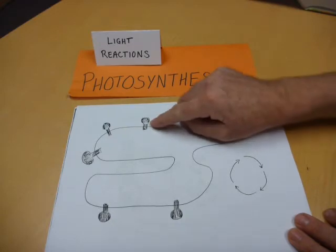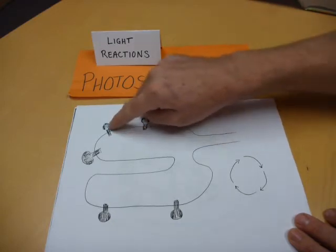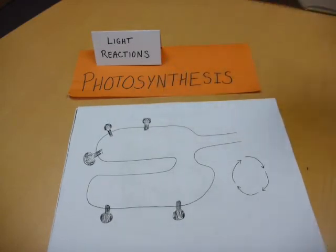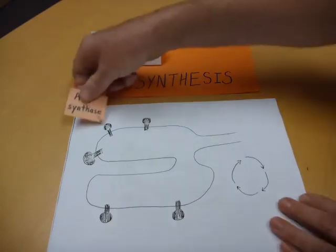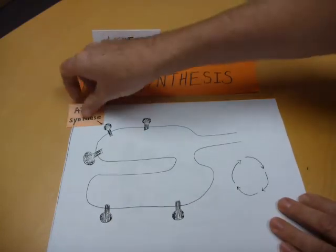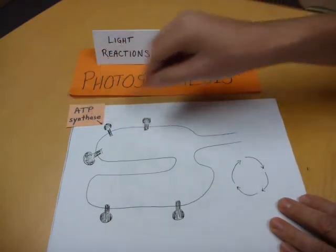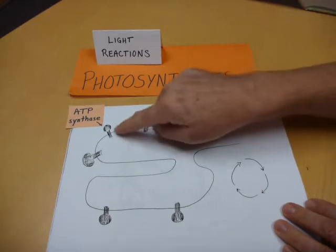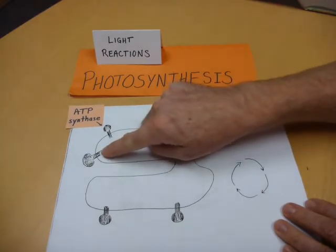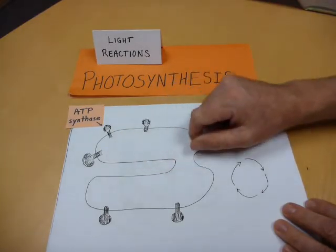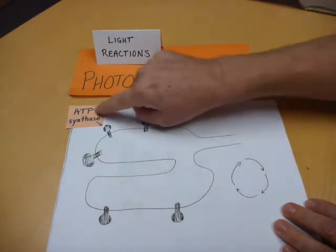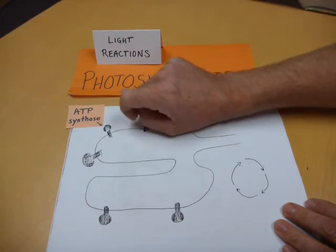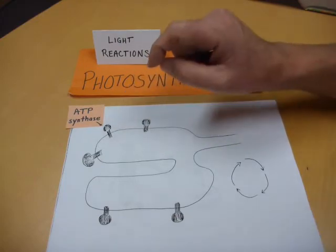If you look in the thylakoid membranes, you have these funny little lollipops, and those are very important because our main job for the light reactions is to make ATP. These are ATP synthase — a name that makes sense. They synthesize ATP.